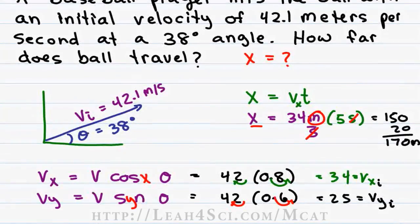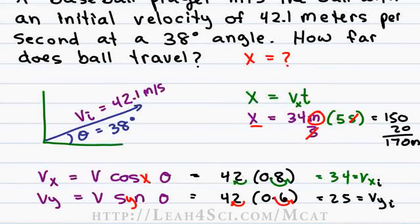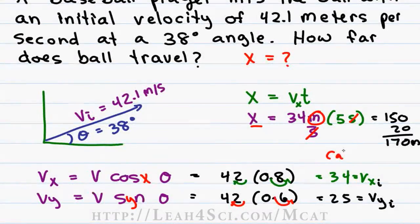Now I realize we did a lot of rounding and estimation in this problem but on the MCAT that's fine because an answer that is close enough is good enough. But just to show you how close we are, I punched these numbers into the calculator and got a distance of 175 meters which as you can see is very very close to our answer.